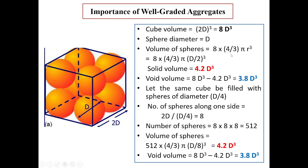If you look at case 1, the solid volume of all the spheres where there were 8 spheres each of diameter D was 4.2D³. Here also, the volume of all the spheres where there were 512 spheres of diameter D/4 is again 4.2D³. In case 1 and 2, it is same. Therefore, void volume in case 2 is again total cube volume 8D³ minus 4.2D³, which is 3.8D³. Here void volume is also same as case 1.